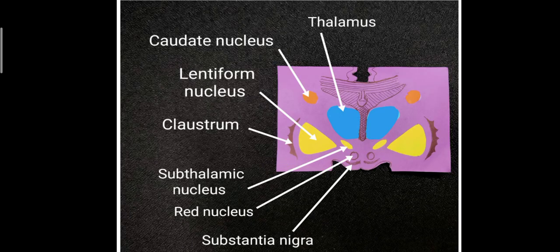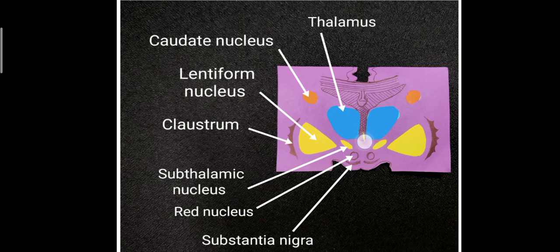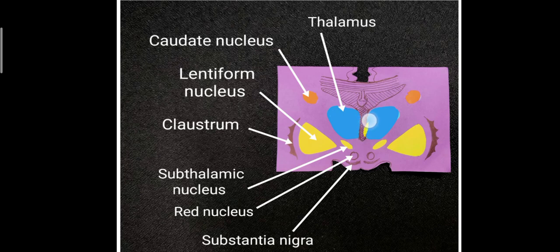Here we have a coronal section through the cerebrum showing the thalamus in blue. You can make out the superior, lateral, medial and inferior surfaces. Between the two thalami you can see the third ventricle, and the lateral ventricles are visible on either side. The superior surface is related to the floor of the lateral ventricle, and the medial surface forms the wall of the third ventricle, covered by ependymal cells.